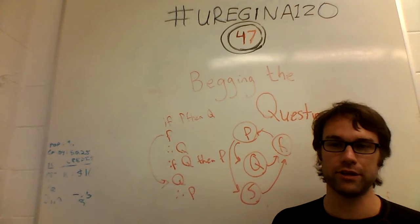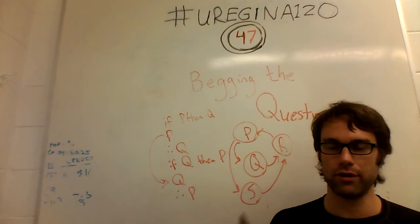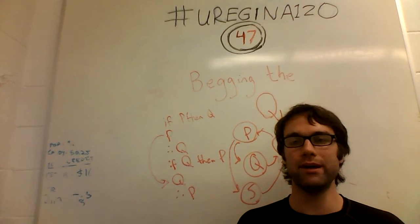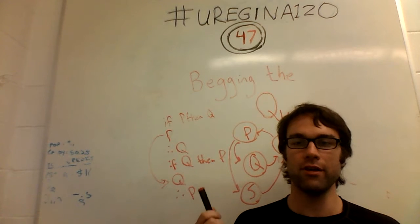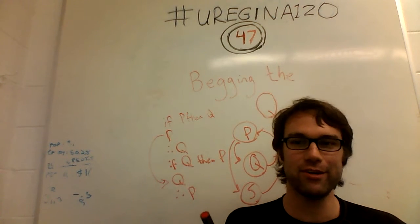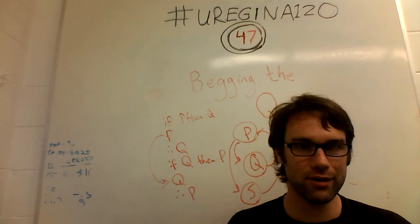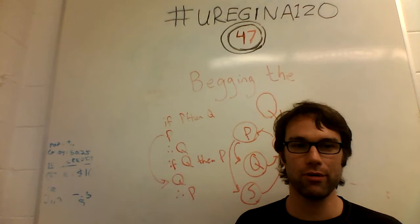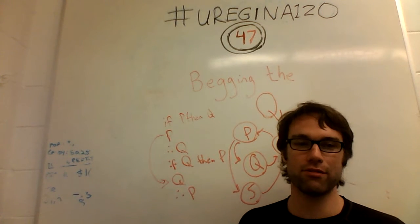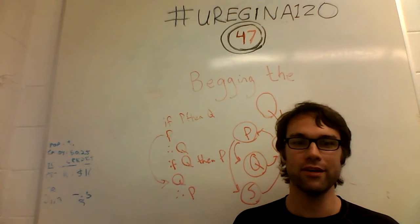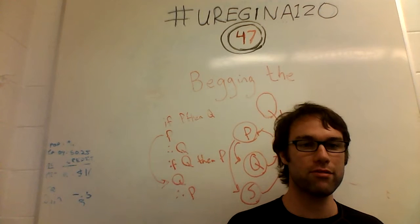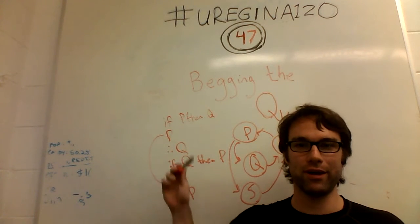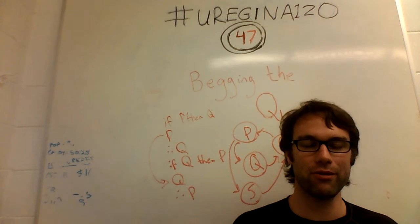Unfortunately, it isn't just religion. You can find this in arguments that have nothing to do with religion. You can get into the nature of consciousness: if DNA is a molecule complex enough that it stores information, and all codes are created by a conscious mind to communicate, and there is no natural process known to create coded information, therefore DNA was designed by a mind. Again, we're going in a circle because we're assuming that codes are only created by a conscious mind.